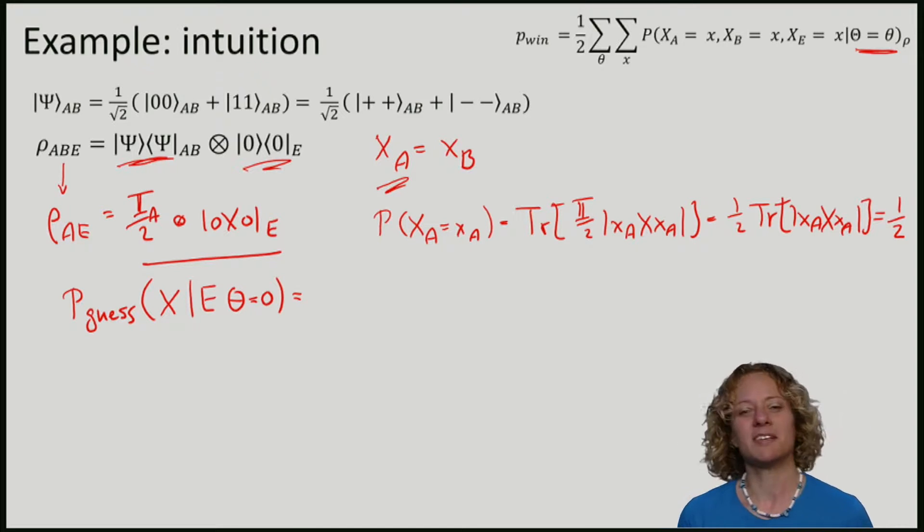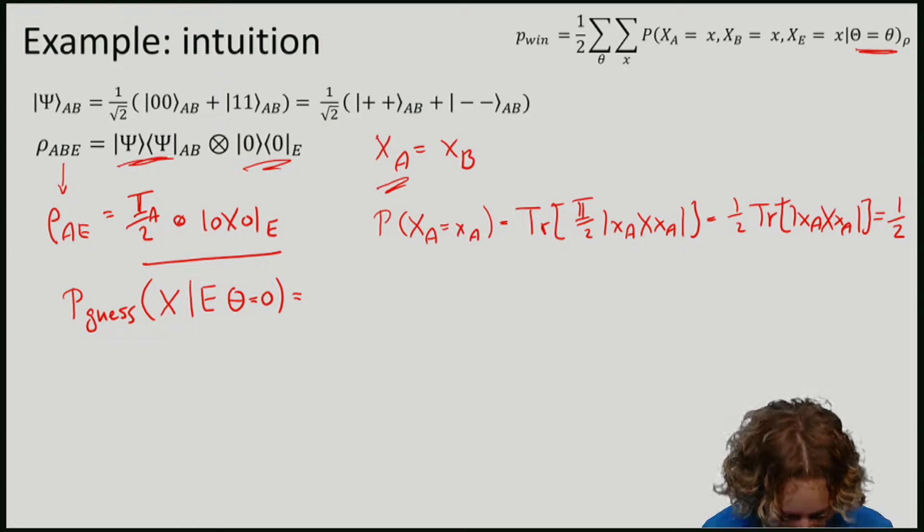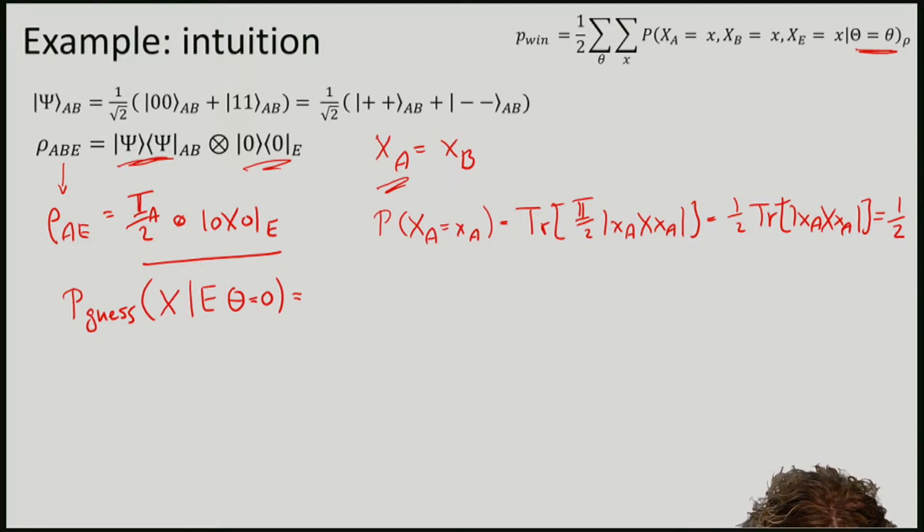So Alice certainly produces random outcomes. So this means that if we're considering maximizing the guessing probability over all measurements that Eve might perform, we consider a situation where xa occurs with probability half.